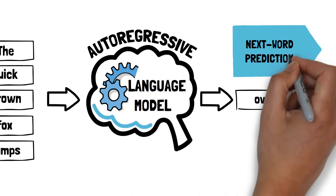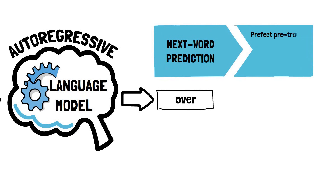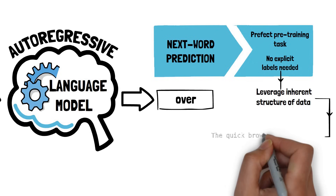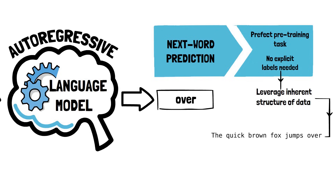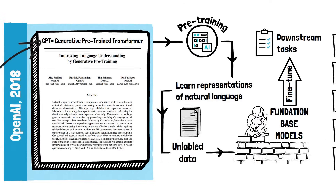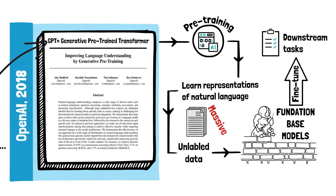Next word prediction is a perfect pre-training task because we don't need to collect labels for the training data explicitly. Instead, we can leverage the structure of the data itself to create the labels the model is supposed to predict during training. Creating labels on the fly allows us to leverage massive unlabeled text datasets during the pre-training phase.